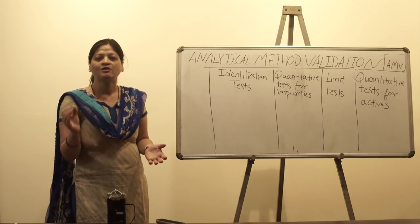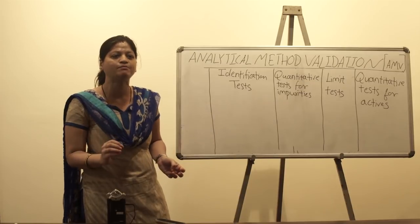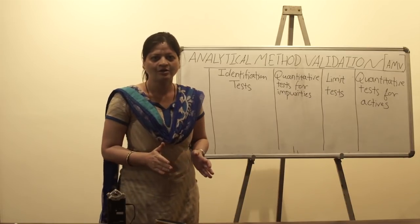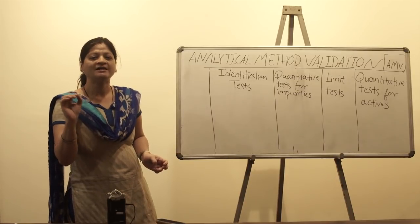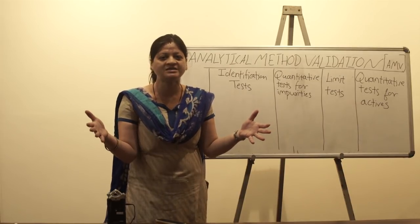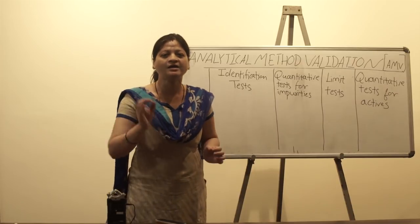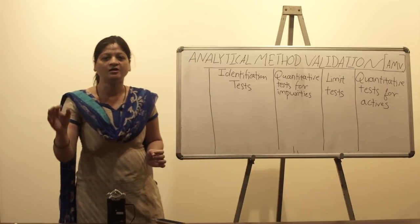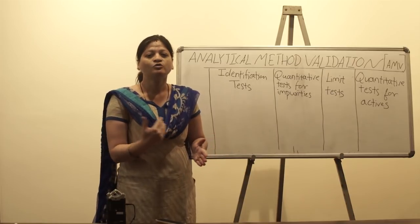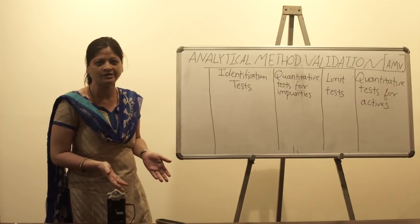Validation means you have to provide documentary evidence that whatever statement you are making with respect to a substance, a method, or anything is true to its content. To validate any statement, you need a measuring device — like a measuring tape for height. In scientific terms, such measuring devices are called performance characteristics or parameters. Any method, process, product, or substance is validated by measuring those performance characteristics.